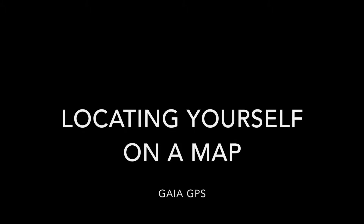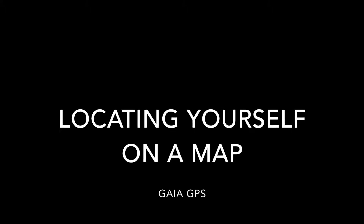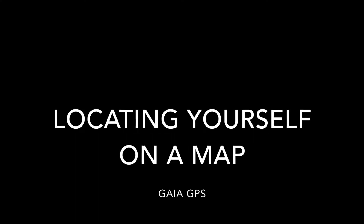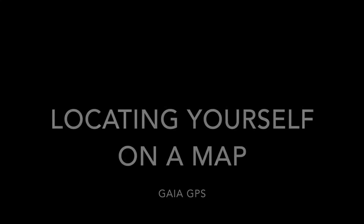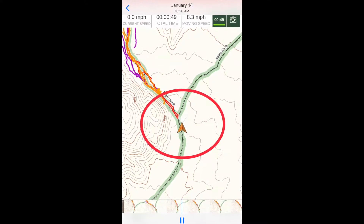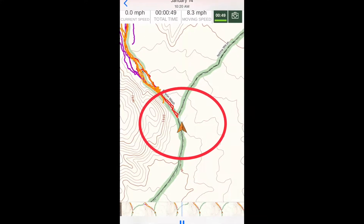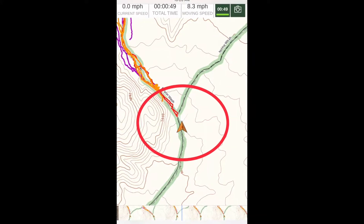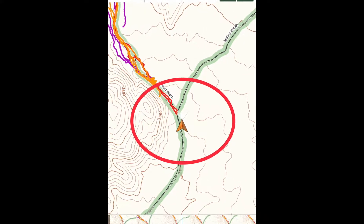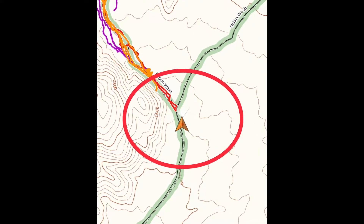Gaia GPS easily shows you where you are on a map. Knowing how to locate yourself on a map could save your life. That sounds melodramatic, but it's easy to step away from a trail, become disoriented, and struggle to find where you were.